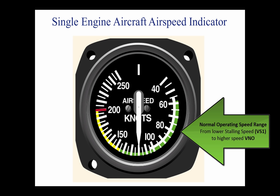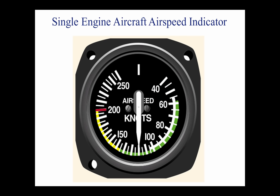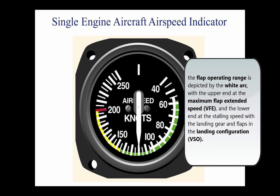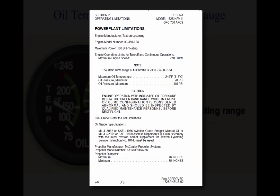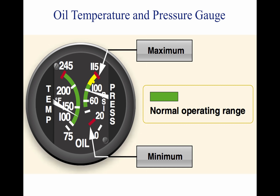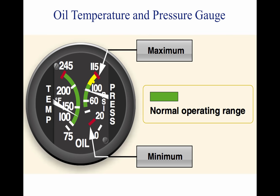A green arc depicts the normal operating speed range, with the upper end at VNO and the lower end at stalling speed at maximum weight with landing gear and flaps retracted. For airplanes, the flap operating range is depicted by the white arc, with the upper end at maximum flap extended speed and the lower end at stalling speed with landing gear and flaps in the landing configuration. The powerplant limitations portion describes operating limitations on reciprocating or turbine engines, including takeoff power, maximum continuous power, and maximum normal operating power, depicted by a green arc. Other items include minimum and maximum oil and fuel pressures, oil and fuel grades, and propeller operating limits.